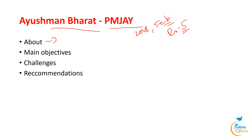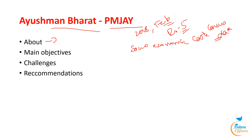The health benefit packages pay for diagnostics, medications, surgery, medical care, and day-care expenses. The beneficiaries of Ayushman Bharat are identified based on the Socio-Economic Caste Census data. Beneficiaries of this entitlement-based program are deemed insured once the database identifies them, and they are free to enter any accredited hospital.